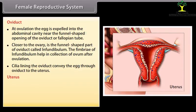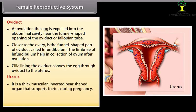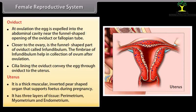The uterus is a thick muscular, inverted pear-shaped organ that supports the fetus during pregnancy. It has three layers of tissue: the perimetrium (outer layer), the myometrium (middle muscular layer), and the endometrium (inner lining).